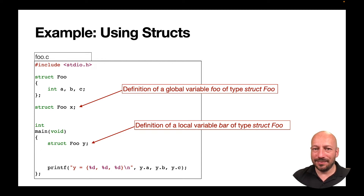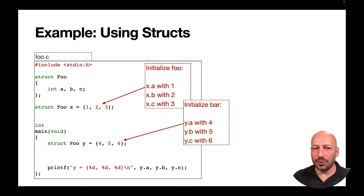The local variable y lives on the stack, so its members have unspecified initial values — we don't know in advance what printf will print for them. If you want to initialize a variable when you define it, you can do so for structured types just like built-in types, using curly brace notation listing the initial values. For global variables, these initial values must be constants. For nested structures, you simply nest the curly braces — examples are on the website.